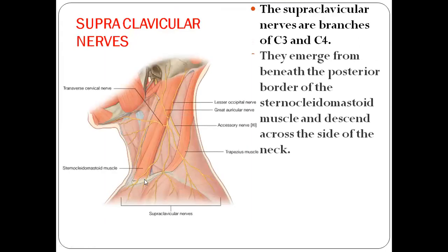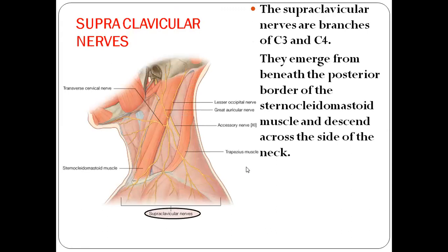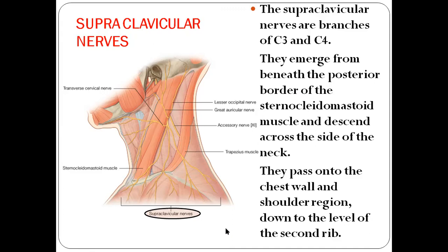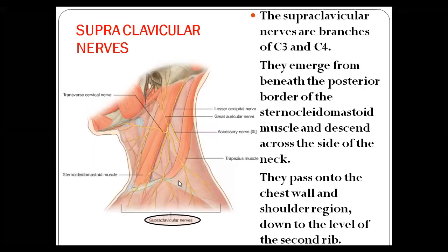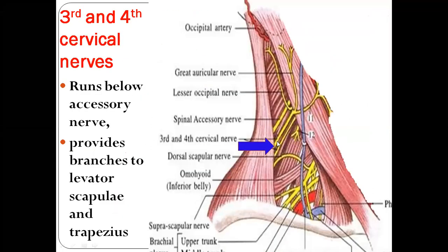The supraclavicular nerves — medial, intermediate, and lateral — arise from C3 and C4. They emerge from beneath the posterior border of sternocleidomastoid, descend across the side of the neck, and pass onto the chest wall and shoulder region down to the level of the second rib. The third and fourth cervical nerves run below the accessory nerve and provide branches to levator scapulae and trapezius.